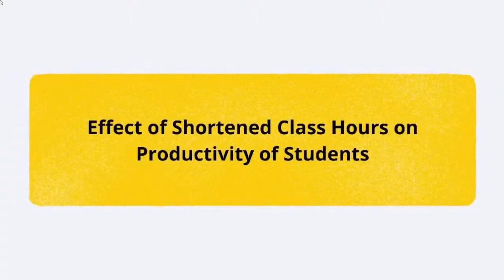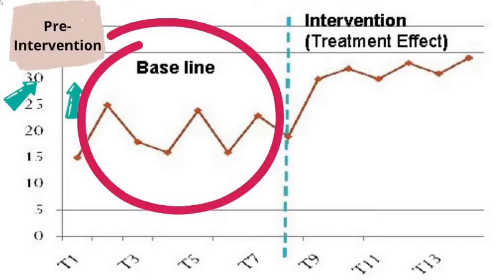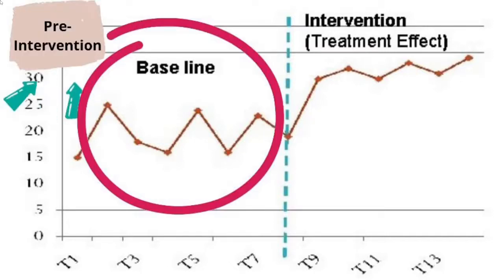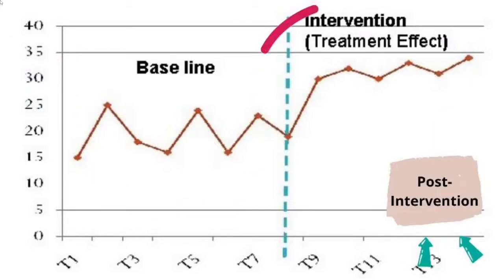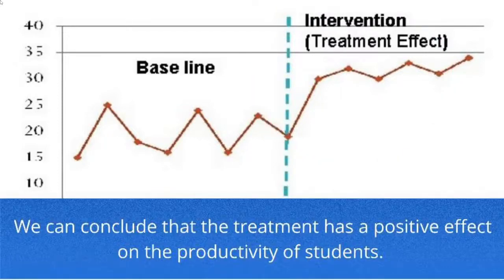Here's a study which aims to determine the effect of shortened class hours on the productivity of students. The researcher will have multiple observations before the treatment is given, which is the shortened class hours. After that, another set of multiple observations will be conducted after the treatment has been given. From here, we can conclude that the treatment has a positive effect on the productivity of the students.